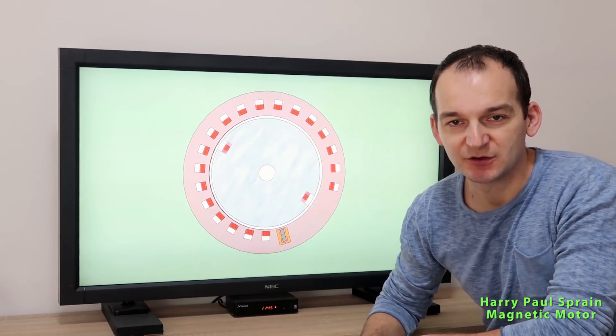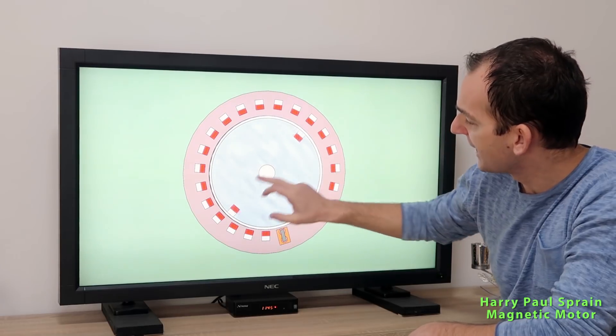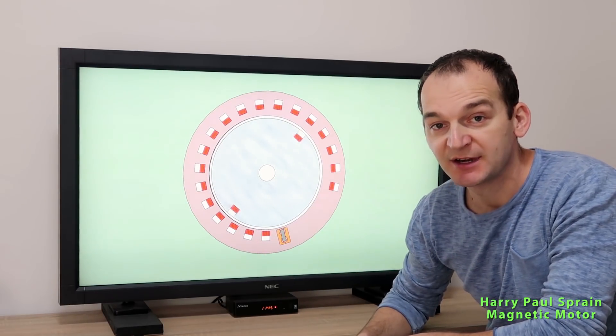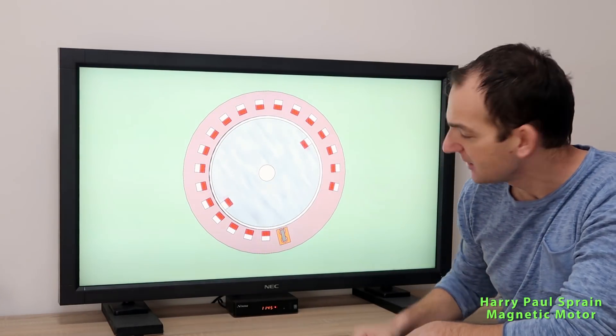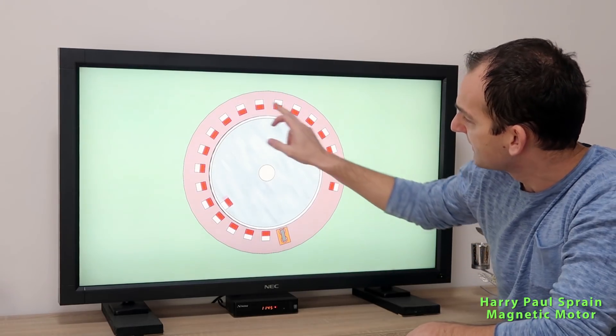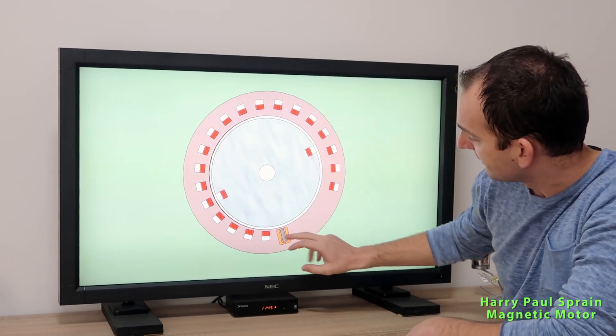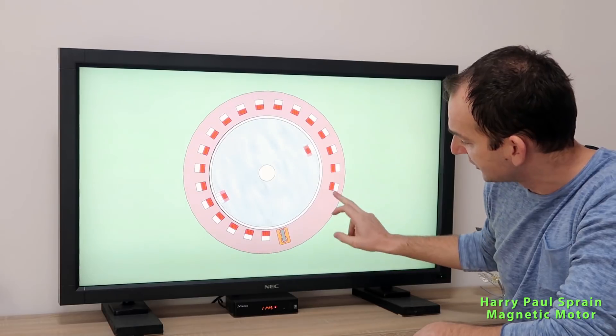What do we have here? We have the rotor in the middle with two rotor magnets separated by 180 degrees, and we have the stator with several magnets in the circle with some blank space on this side over here.